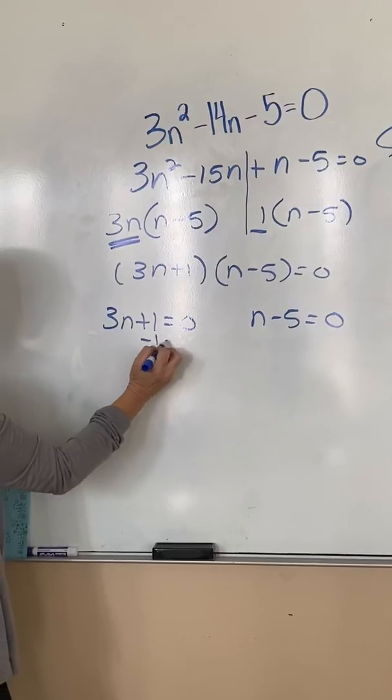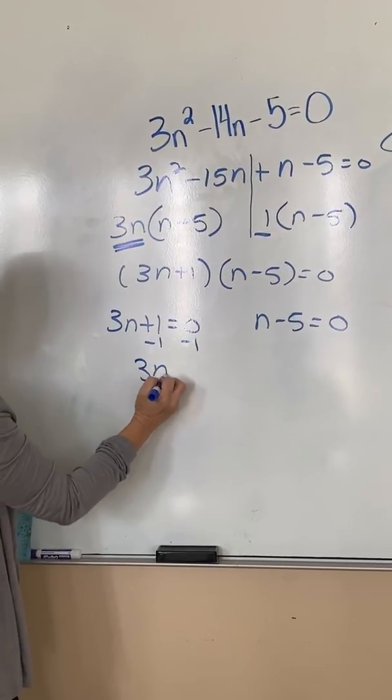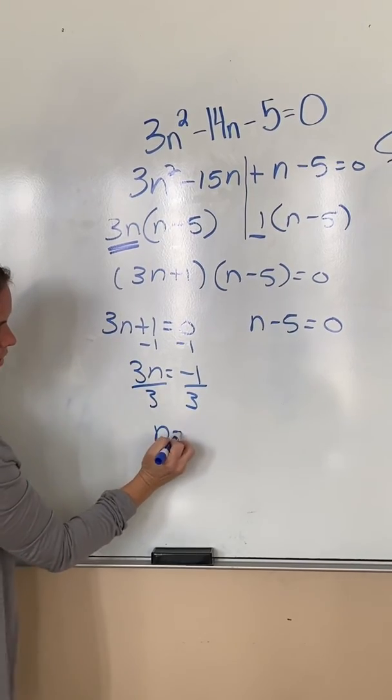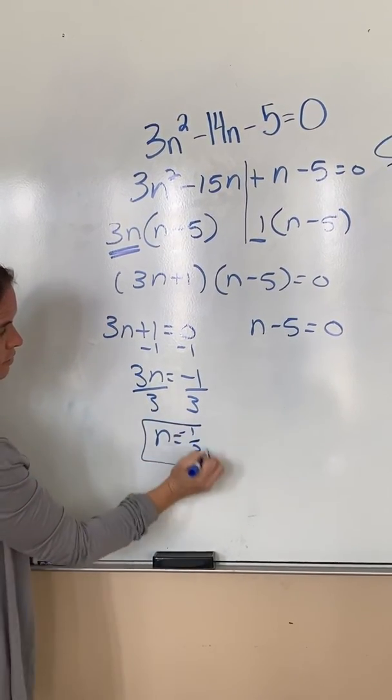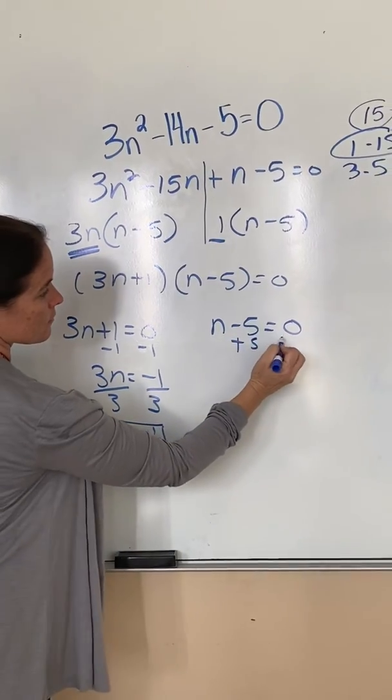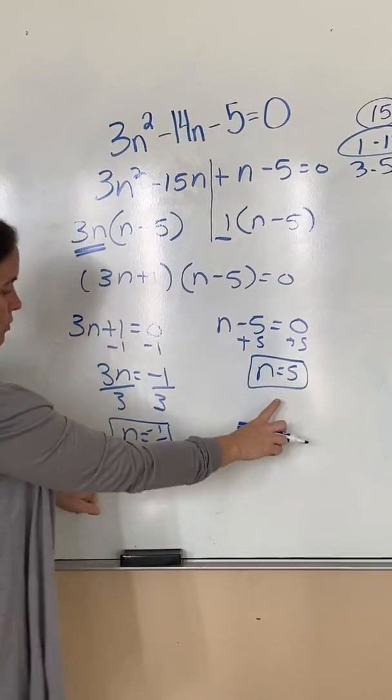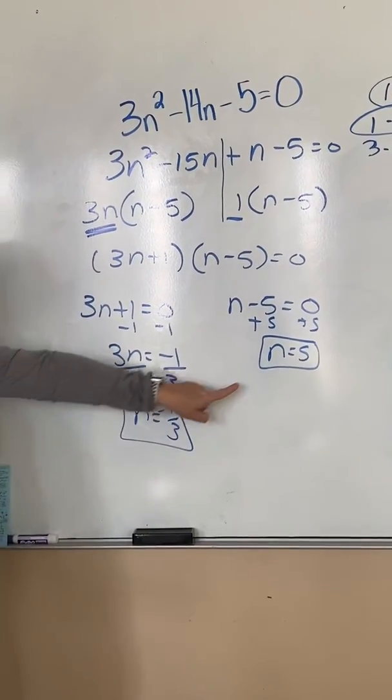Subtract 1 on both sides to get n by itself. Divide by 3. So n equals negative 1/3 and n equals 5. So those are my two solutions: n equals negative 1/3 and n equals 5.